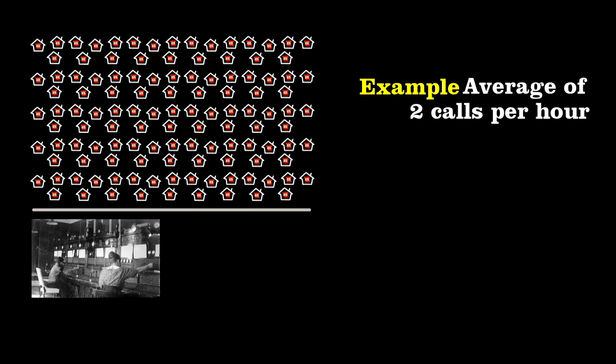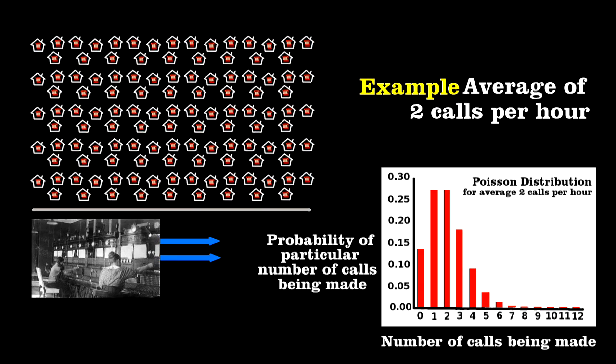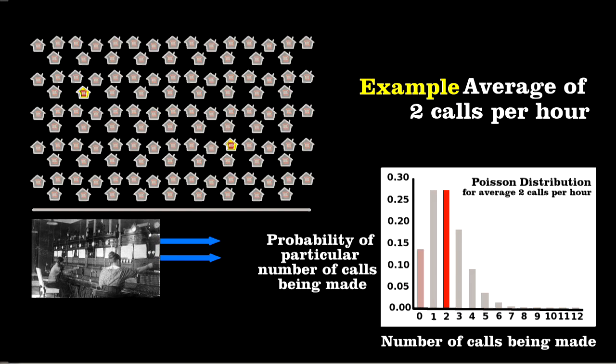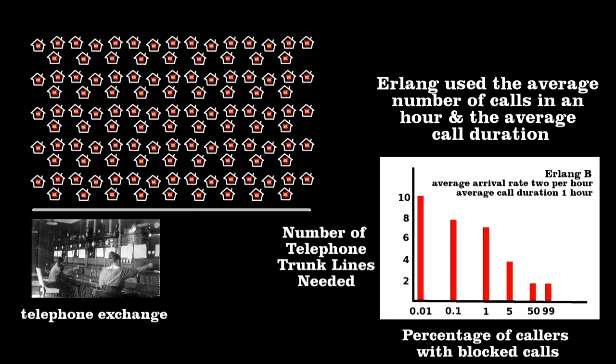To see what Erlang did, let's look at a town where there's an average of two calls an hour. You'd think two trunk lines would do, but Erlang showed that although the average rate is two an hour, the calls will bunch up. A lot of times it will be only two calls, but also sometimes none or three or four or five will occur. He showed that given the average number of calls and their average length, one can estimate the number of trunk lines needed.